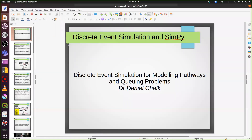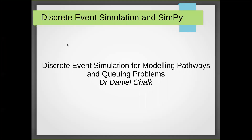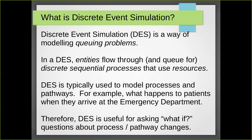Let's start talking about discrete event simulation for modelling pathways and queuing problems. Discrete event simulation, or DES, is a way of modelling queuing problems. If we think of a lot of problems in the real world, particularly in healthcare, many are essentially queuing problems — we've got a real world system where queues are building up as people are waiting. Sometimes they may be physical queues, literally people waiting, or a more abstract queue like a waiting list.